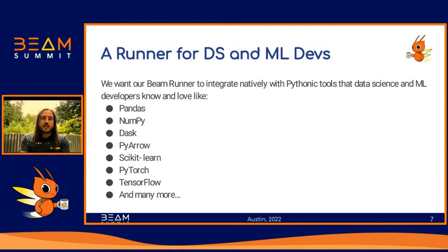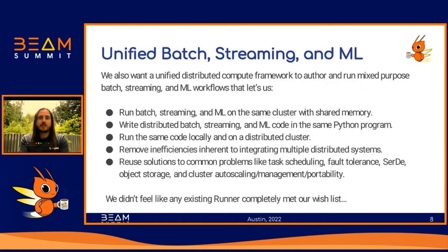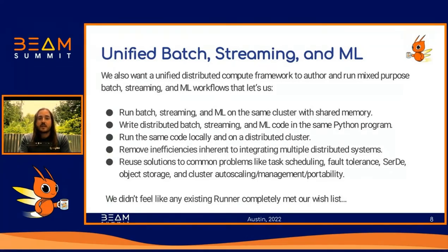Furthermore, we didn't want to use multiple different distributed compute frameworks to author and execute mixed-purpose batch, streaming, and ML pipelines. We wanted one unified compute framework to rule them all. Specifically, we wanted to distribute and run our batch, streaming, and ML workloads on the same cluster and give these workloads access to the same shared memory pools. This removes many inefficiencies that sneak in when using multiple distributed systems, since transferring data between them typically requires high-latency operations to read and write data between disk or cloud storage.